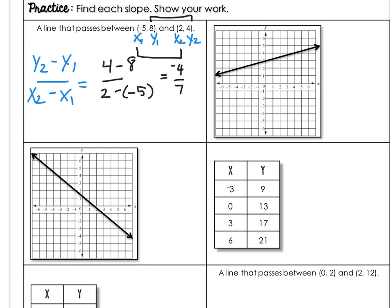Now just to show you that if I had labeled it the other way around, I still would have gotten that same answer. If instead I do 8 minus 4 over negative 5 minus 2, now I get 8 minus 4 is 4, negative 5 minus 2 is negative 7. And we know that negative 4 over 7 and 4 over negative 7 will give us the same line, same rate of change, same slope.